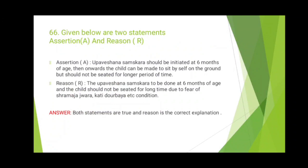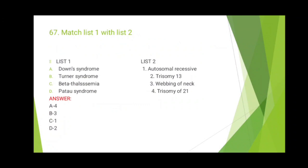The 67th question has list 1 with common genetic disorders in children and list 2 with associated features. Down syndrome is trisomy of the 21st chromosome — remember by counting descending: 2 then 1, so trisomy 21. Turner syndrome has webbing of the neck — remember by turning your neck when called. Beta thalassemia is an autosomal recessive disorder. Patau syndrome is trisomy of 13.